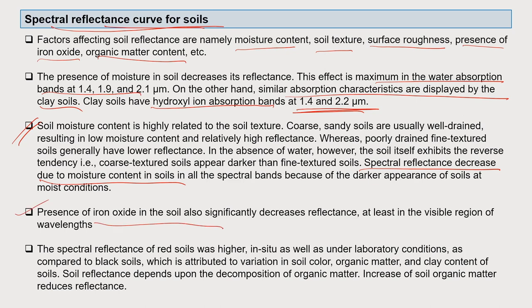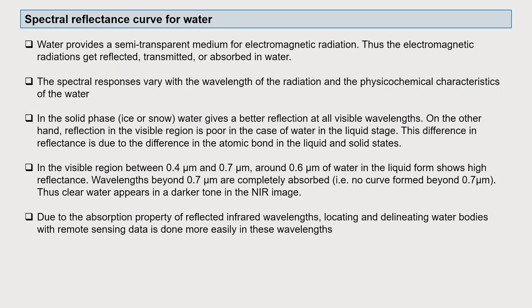Less reflectance from soil indicates high moisture content. Presence of iron oxide also significantly decreases reflectance in the visible region. Red soils generally have higher spectral reflectance compared to black soils, due to variation in soil color, organic matter content, and clay content. Increasing soil organic matter reduces reflectance. Therefore, low reflectance could indicate high moisture, high organic matter, or clay soil — all of which should be confirmed with ground truthing.